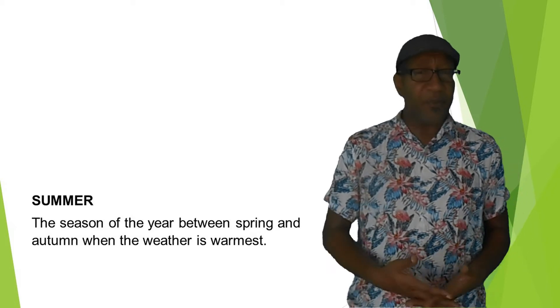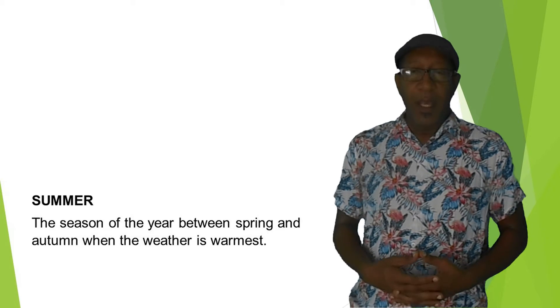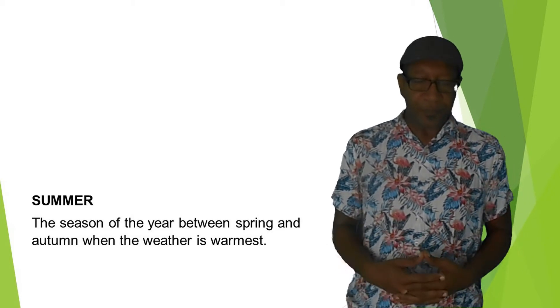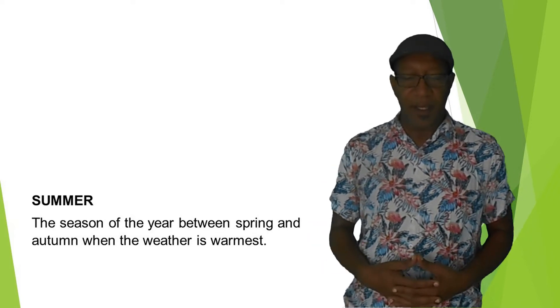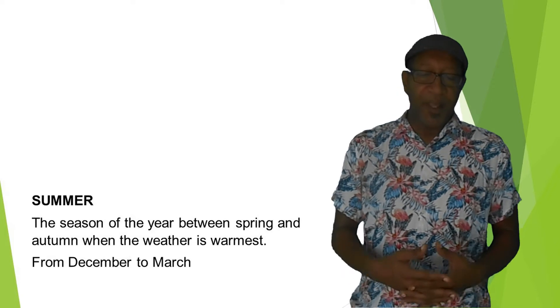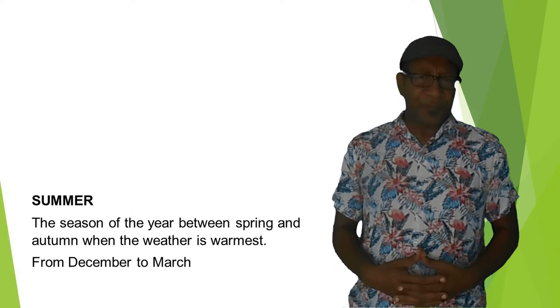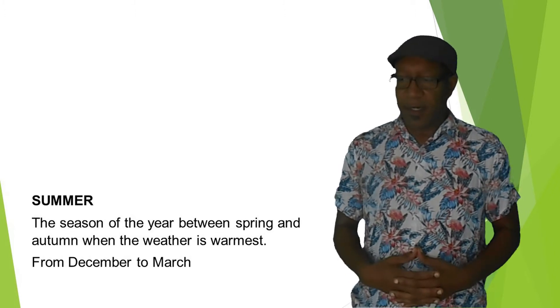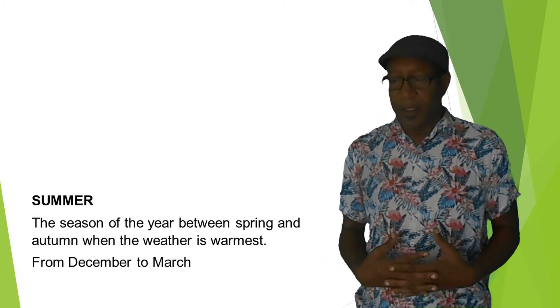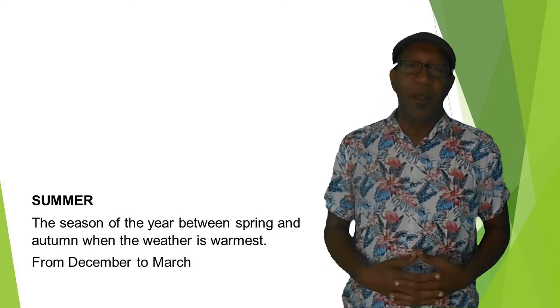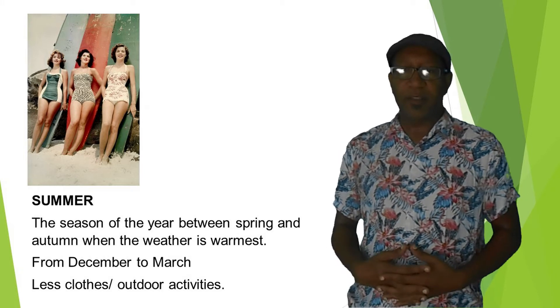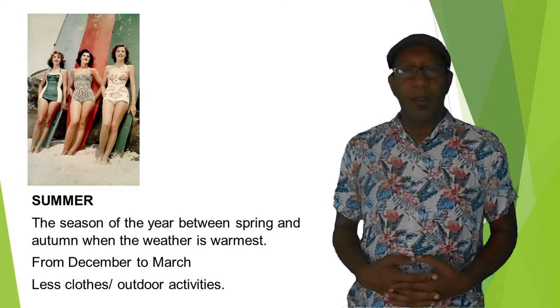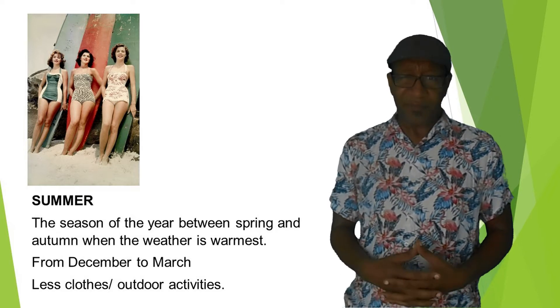Talking about seasons, we will start with summer. Summer is the season of the year between spring and autumn, when the weather is warmest. In our country, it happens from December to March. In this season, people usually dress in fewer clothes and are most interested in doing outdoor activities. As you can see in the image, there are some girls and some surfing boards — probably California during the 60s.